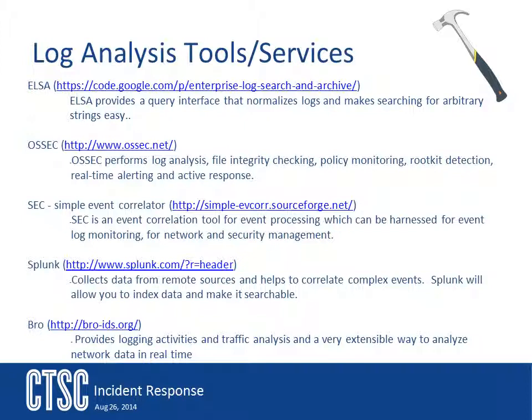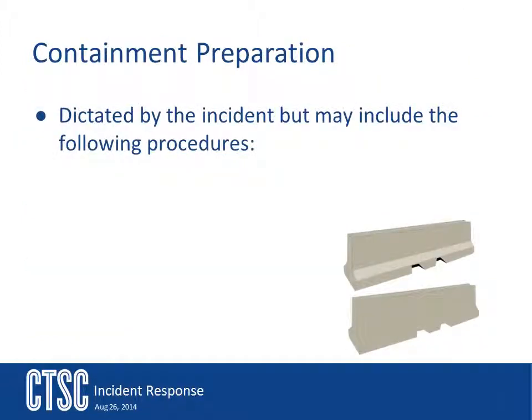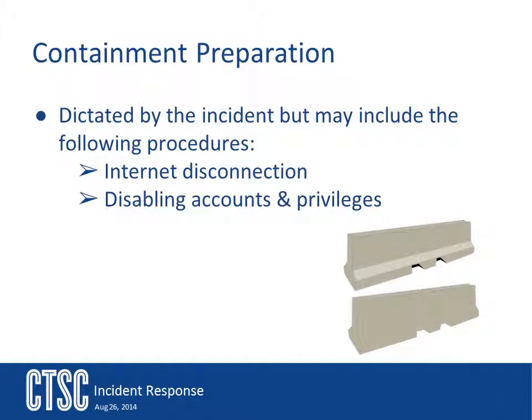Containment is a difficult challenge. Being prepared to do containment is really dictated by each individual incident, so it is hard to tell you what steps to take and in what order. This will really be determined by the incident and what is going on in real time. You might have to do anything from disconnecting the internet — a process that will protect you from the outside — or disabling user accounts or privileges, which can go from a single user to an entire system. Firewalls and blocks are a good thing; if you know where the attack is coming from, you could quickly block it and stop it from occurring. Black hole routing is a technique where you make it look like things are being routed somewhere, but they're really not going anywhere — this allows you to monitor things for a while and see what's going on.